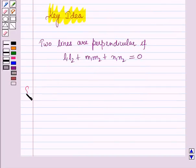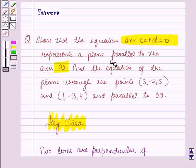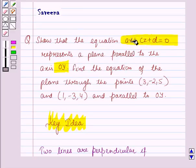Now we will start with the solution. We have to show that the equation AX plus CZ plus D equals 0 represents a plane parallel to the axis OY. For this, we will show that the normal to the given plane is perpendicular to the axis OY. If the normal to the given plane is perpendicular to OY, then this plane is parallel to OY.